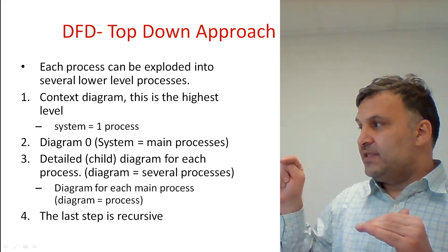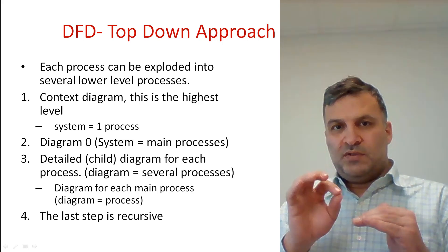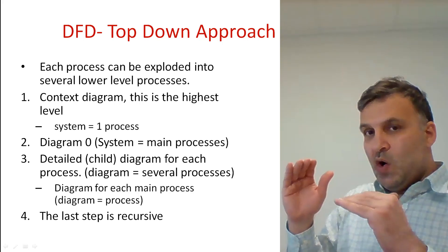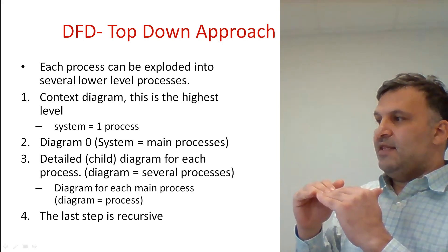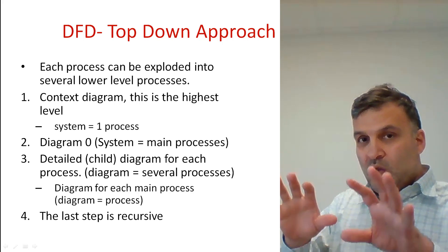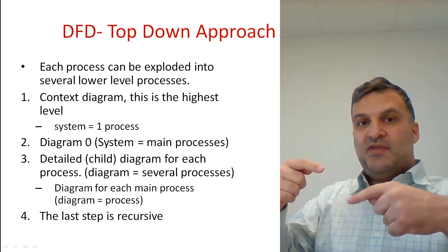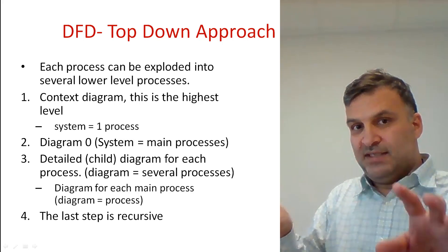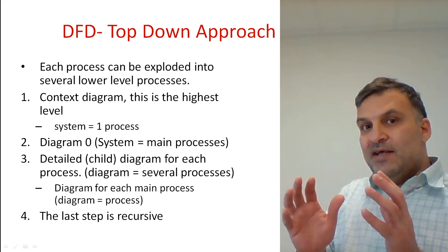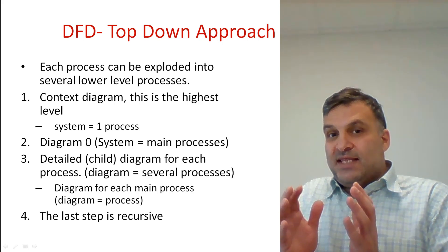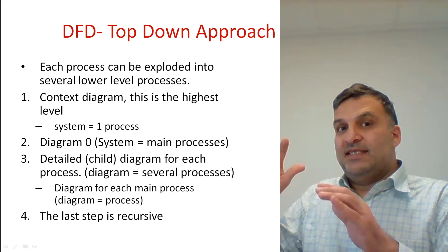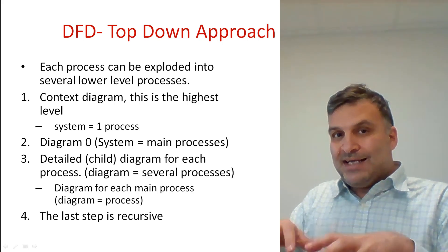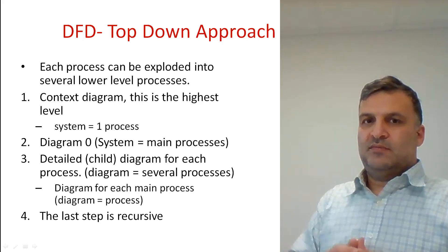After that we talk about level zero. In level zero, we can see the main processes and the main data stores in the system, alongside the external entities. All what we see in the context diagram we can also see in level zero — all the external entities, all the arrows that represent the input and output of the system — but instead of one process we can see many processes and the main data stores. With this approach, we can concentrate on the external communication between the system and the environment.